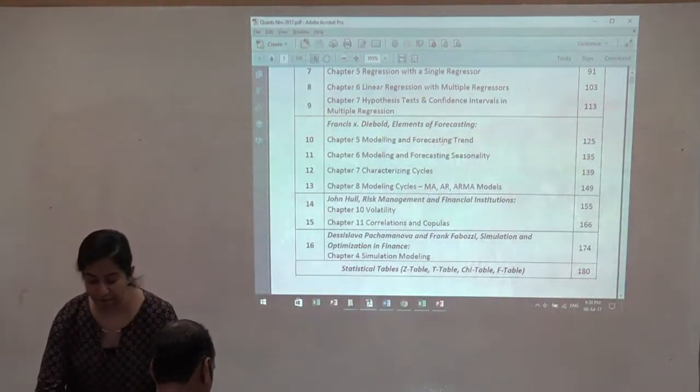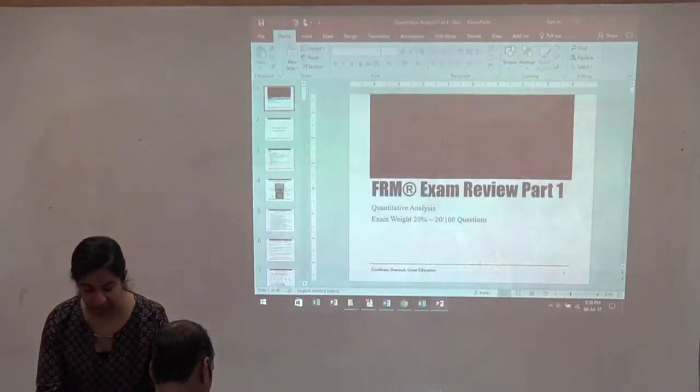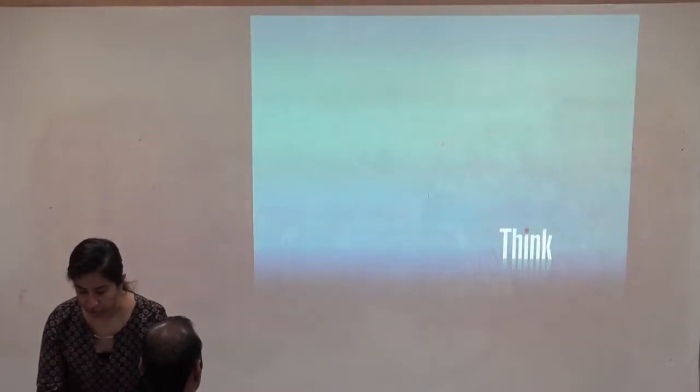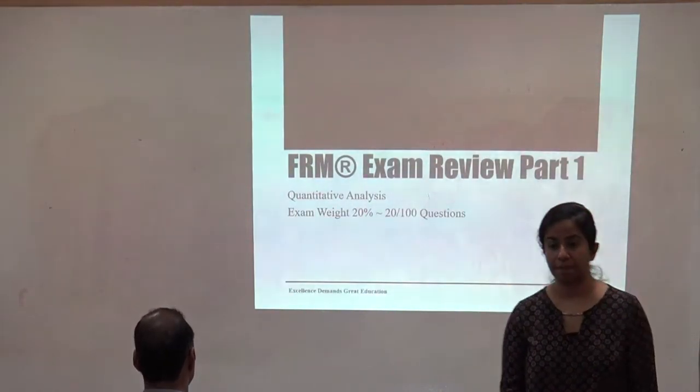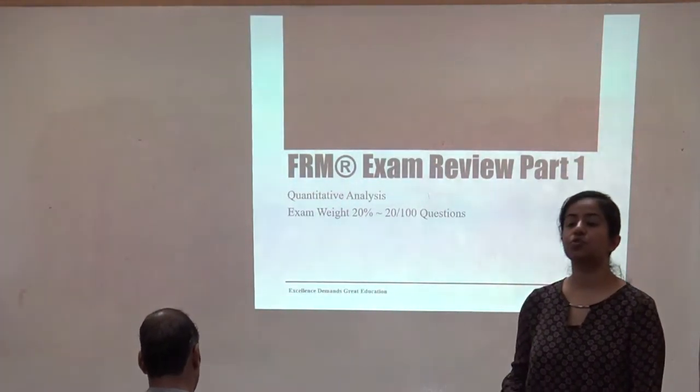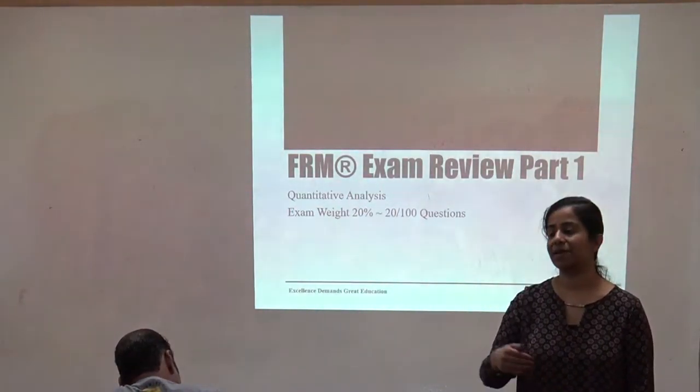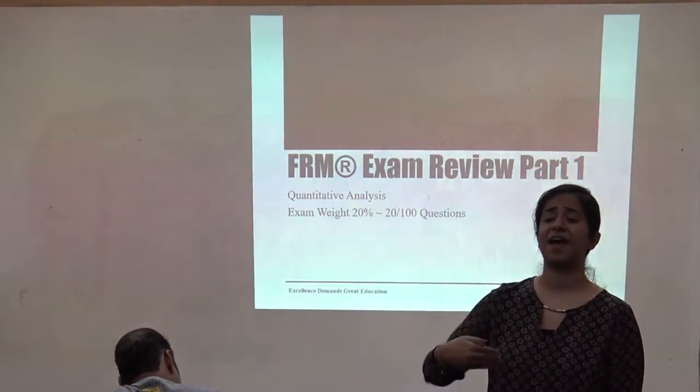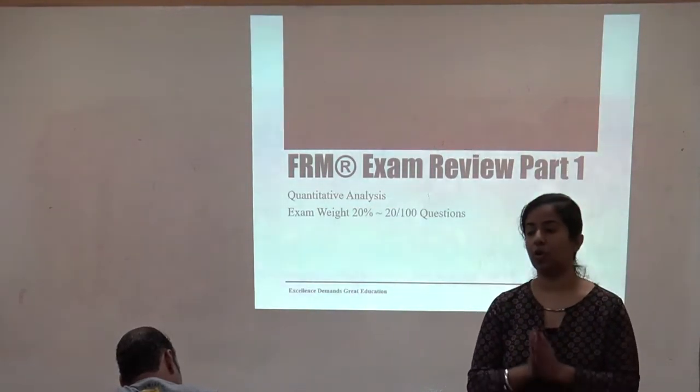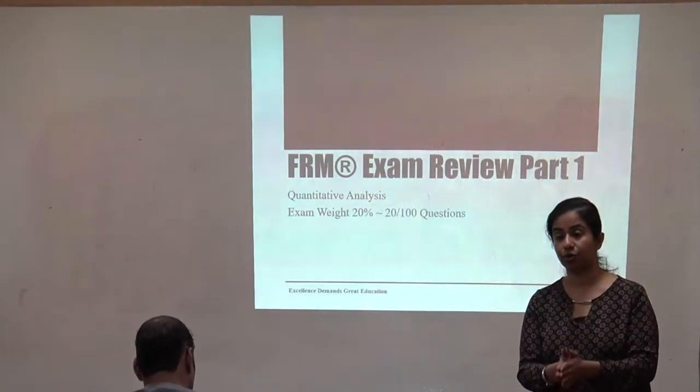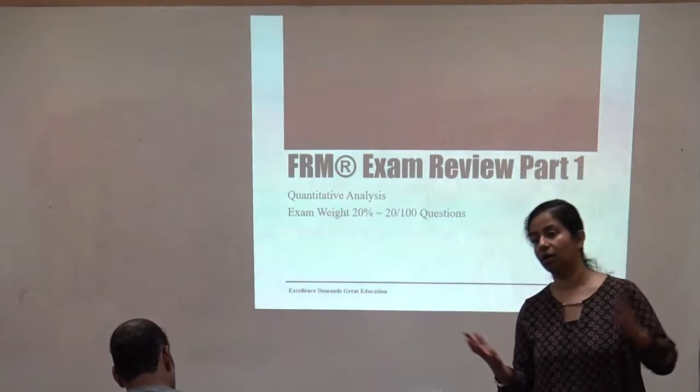The rest of the chapters are pretty much theory again. Correlation copulas and followed by simulation modeling. At the end of the book, you have your statistical tables. So the Z table, T table, Chi table and F table. On the exam day, you will only be given the Z table. The other tables will not be provided. However, you're still required to look up numbers on these tables in the event that they provide you a small excerpt or a snapshot of the table.